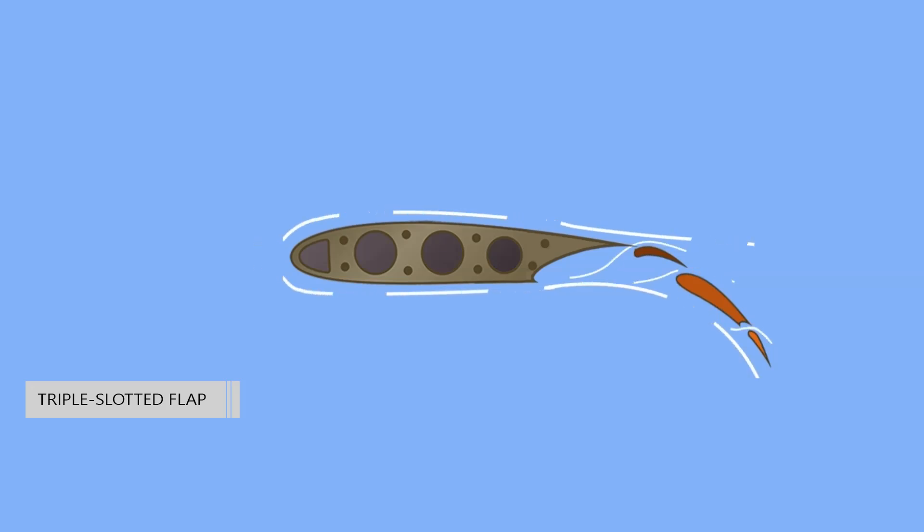Air from the underside of the wing flows through these slots. The result is that the laminar flow on the upper surfaces is enhanced. The greater camber and effective wing area increase overall lift.